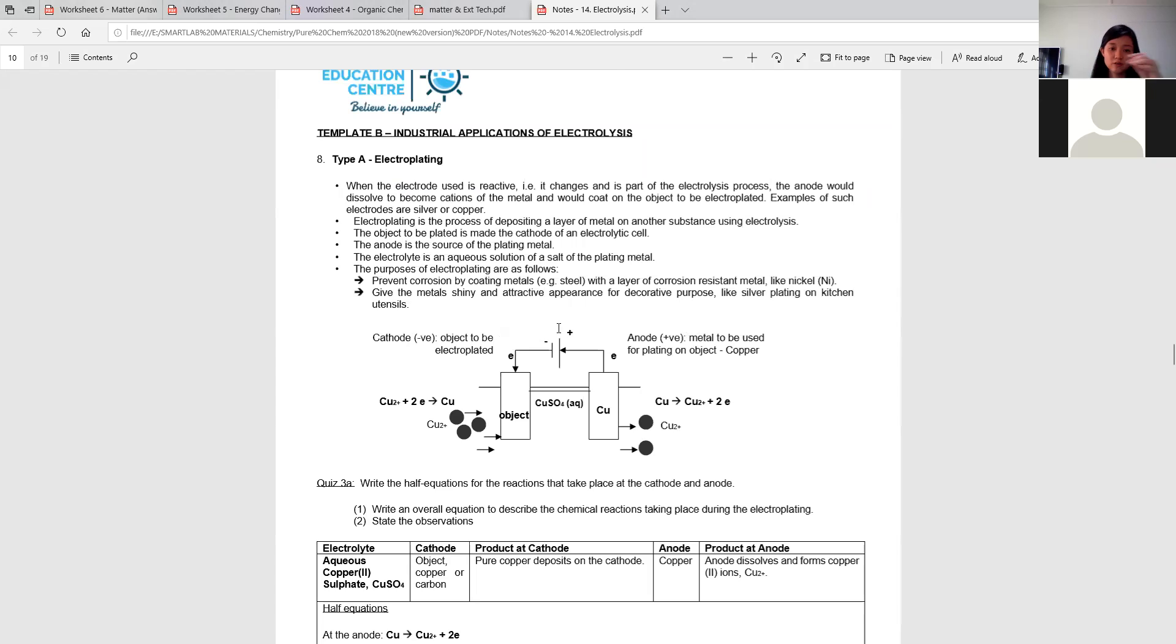But you have to take note, for metal, it will only go through oxidation because metal will only be losing electrons, it cannot be gaining electrons. Which means only the anode side, the electrode that is a metal, it will go through oxidation. The anions will not go through oxidation, anions will still be stuck in the solution.